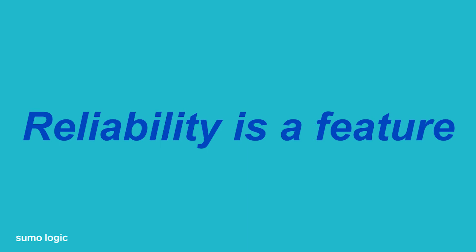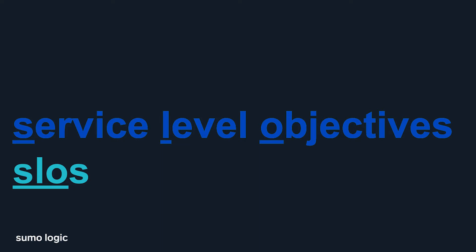Reliability is a product feature — it's part of the user experience, which means it's in the domain of product. As a feature, it naturally competes with other features that make users happy, whether that's net new functionality, user experience improvements, or bug fixes. Just like it's possible to underinvest in reliability, it's also possible to overinvest. If you spend time making things more reliable than what users need, you're giving them things they don't care about instead of other features they'd rather have. You need a way to have conversations about what level of reliability makes users happy — and that is where service level objectives come in, also known as SLOs.